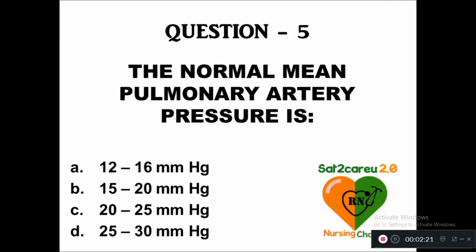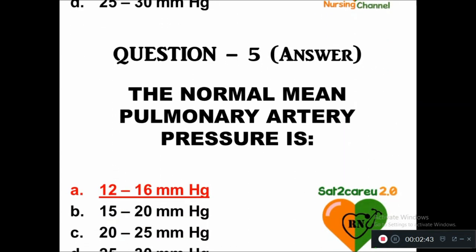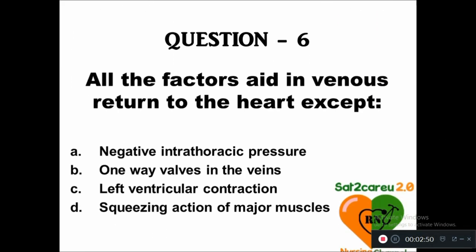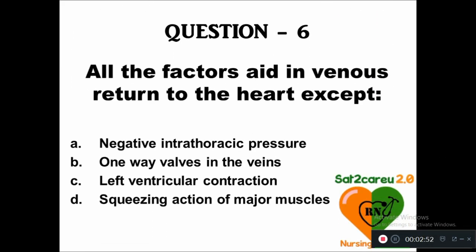Question 5: The normal mean pulmonary artery pressure is — A: 12 to 16 mmHg, B: 15 to 20 mmHg, C: 20 to 25 mmHg, D: 25 to 30 mmHg. The right answer is option A, 12 to 16 mmHg.